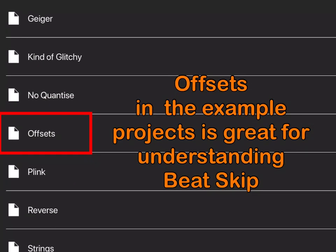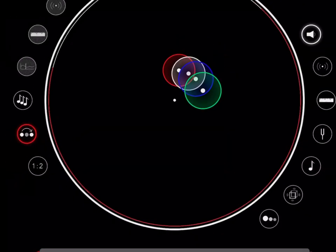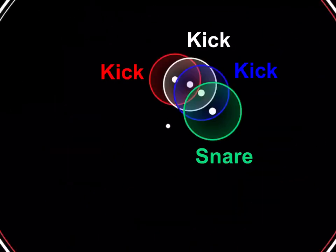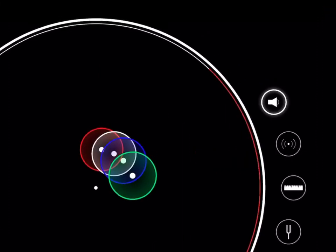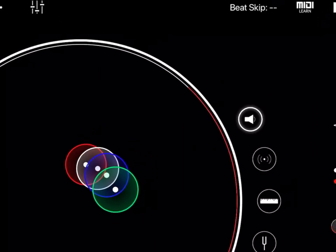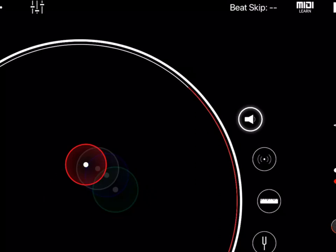The offsets example is a great one to explore to understand the Beat Skip feature better. The red, white, and blue notes are different kick drum samples, and the green note is a snare. Each node plays every fourth cycle, but with a different offset.